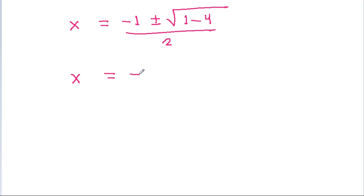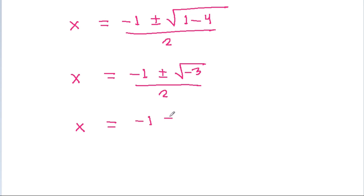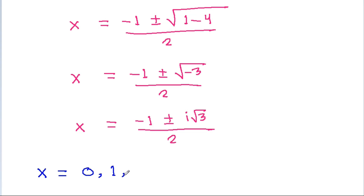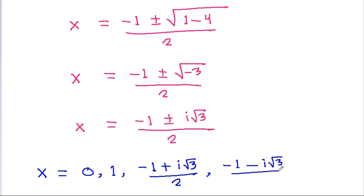So, x equals minus 1 plus or minus square root of minus 3, divided by 2. Since the square root of minus 3 is iota times root 3, we get x equals (minus 1 plus iota√3) / 2 and x equals (minus 1 minus iota√3) / 2. Therefore, the four values of x are: 0, 1, (minus 1 plus iota√3) / 2, and (minus 1 minus iota√3) / 2.